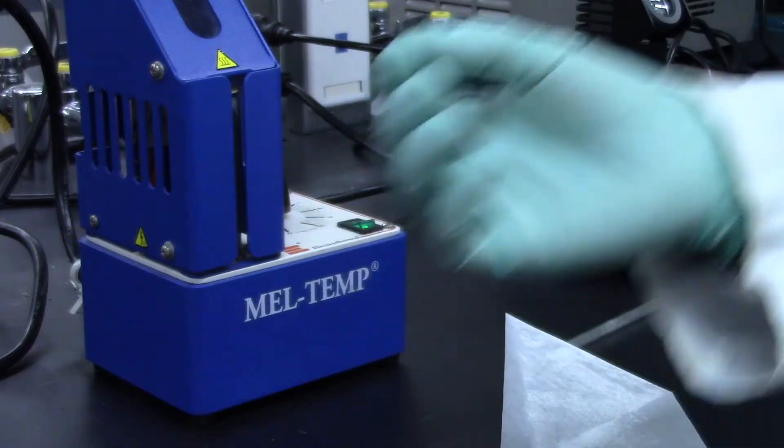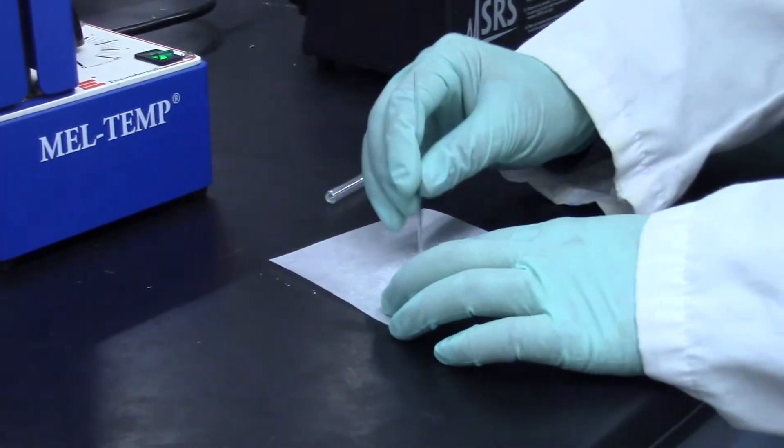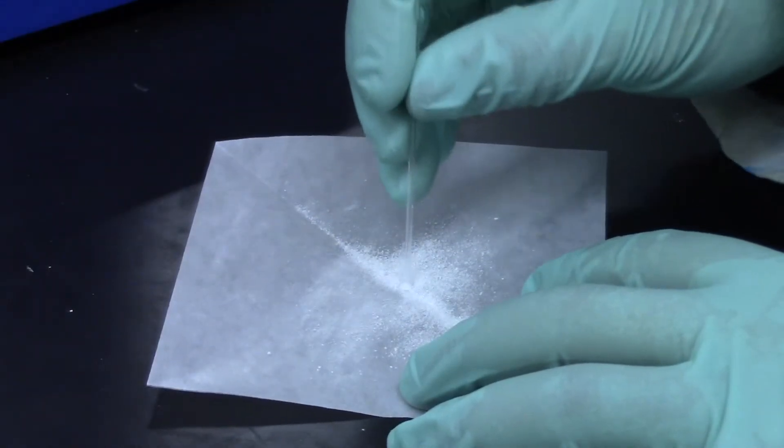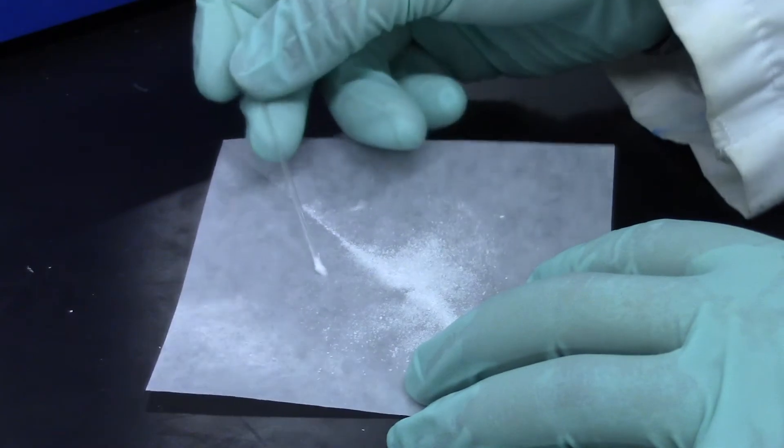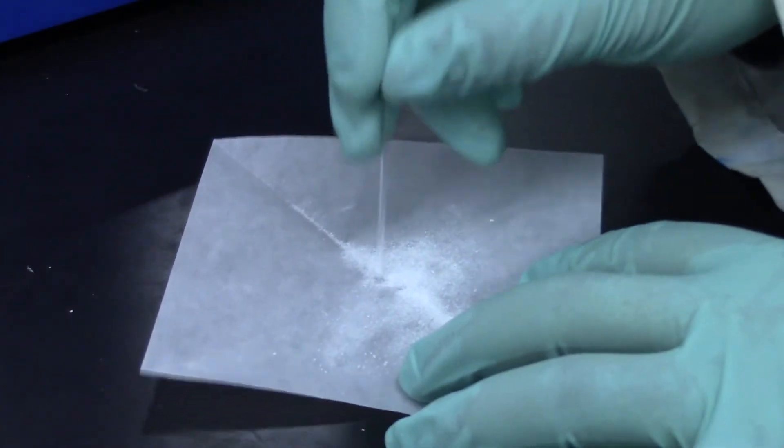Once the powder has been prepared, stamp capillary tubes. Make sure you use the tubes where one end is closed onto the substance. Two or three stamps normally add enough of the substance into the tube.